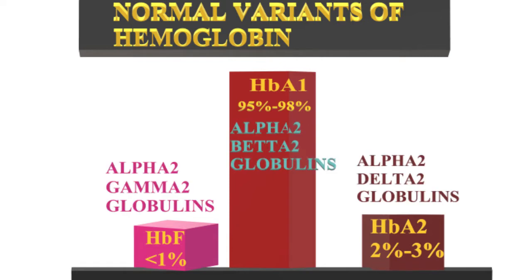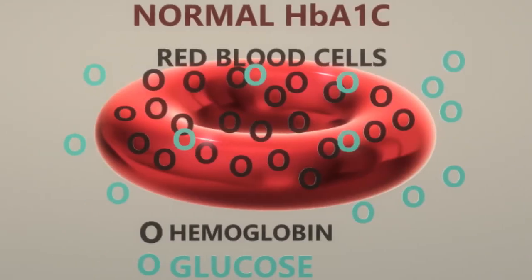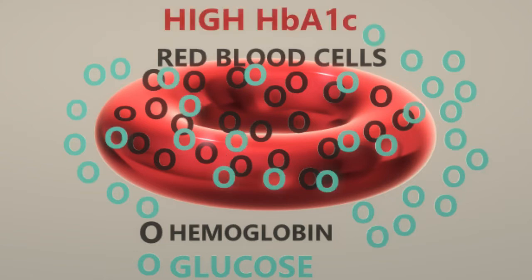A small amount of hemoglobin A1 undergoes glycation of glucose and the N-terminal valine of the beta chain to form HbA1c. The amount of glucose attachment depends on the amount of glucose present in circulation. In diabetes, more glucose is attached due to increased glucose levels, raising the level of HbA1c.